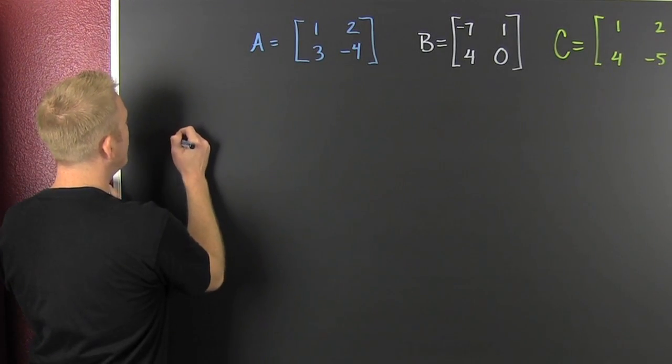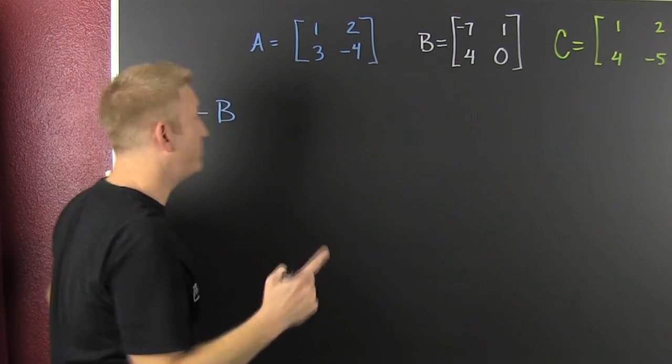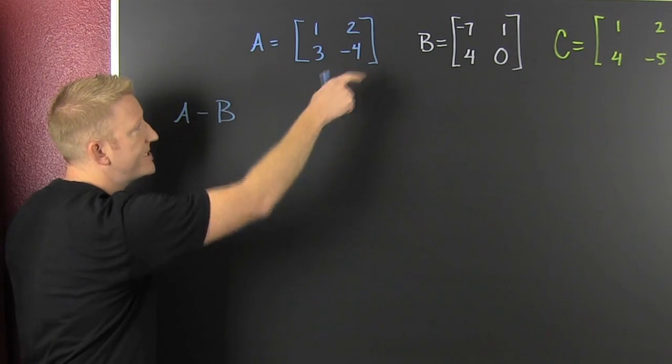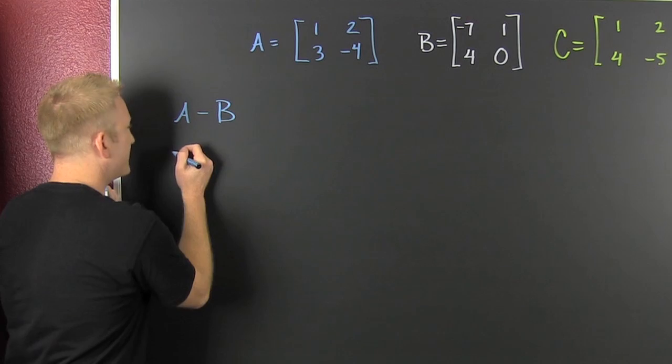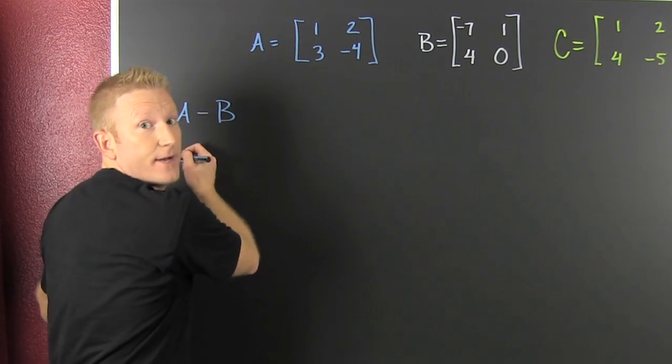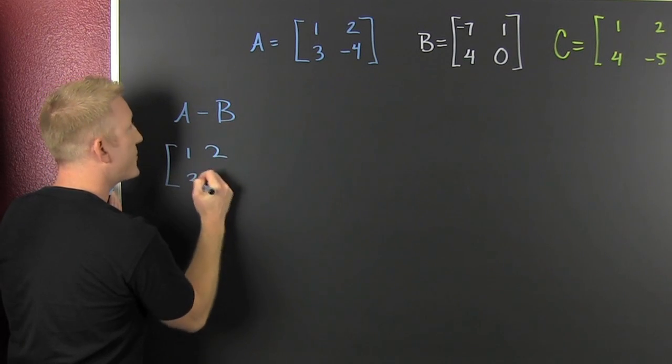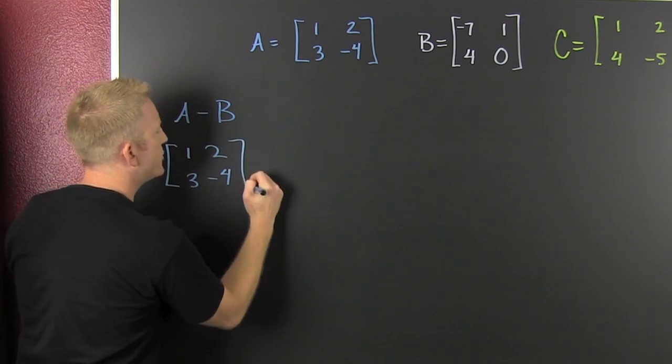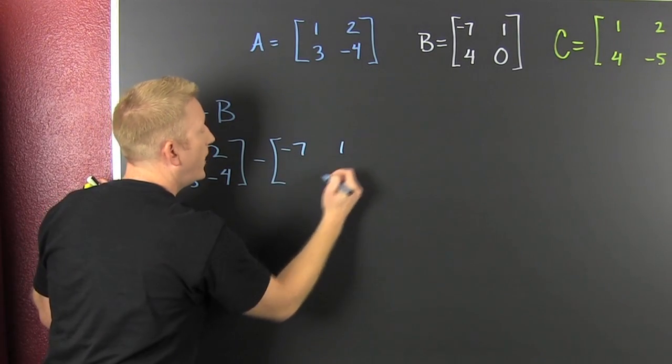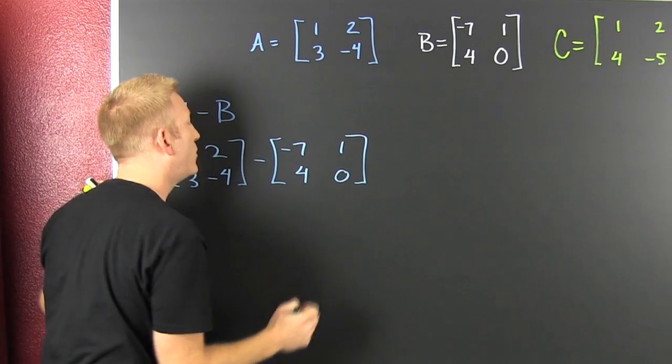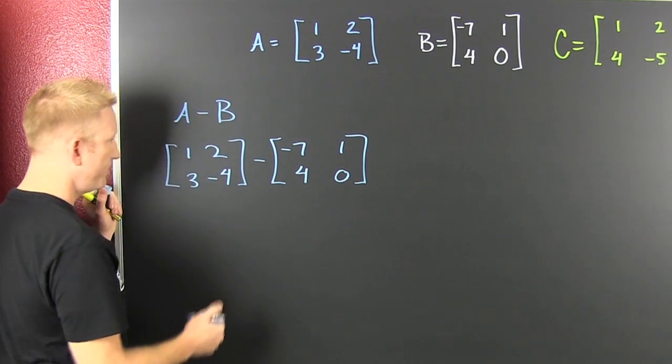Let's do A minus B. Here we can see that this is B times a scalar multiple of minus 1, changing the sign of everything on the inside and then you add them. But let's not get too crazy. Alright, so I'm going to take that 1, 2, 3, minus 4. And I'm going to subtract off minus 7, 1, 4. So then we go. And we subtract them component wise.